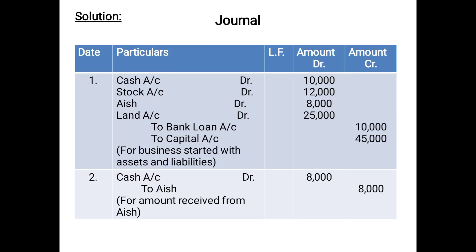Now that we have passed all the journal entries, you need to prepare the following accounts: Cash Account, Stock Account, Ash Account, Land Account, Bank Loan Account, and Capital Account. Since all these are part of the opening entry, the opening balances of assets — Cash, Stock, Ash, and Land — will be posted on the debit side as 'To Balance Brought Down': Cash 10,000; Stock 12,000; Ash 8,000; Land 25,000. For Bank Loan Account, on the credit side write 'By Balance Brought Down' 10,000; and for Capital Account, on the credit side write 'By Balance Brought Down' 45,000.